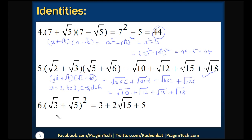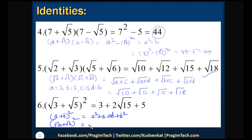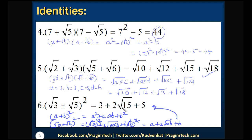Let us discuss one more identity, which is in the form of root a plus root b whole square. As you know, a plus b whole square is a squared plus 2ab plus b squared. Writing root a and root b in place of a and b: root a squared plus 2 into square root of a into b plus root b squared. Canceling square and square root gives the identity: a plus 2 into square root of ab plus b. For the example, this gives 3 plus 2 into square root of 15 plus 5.